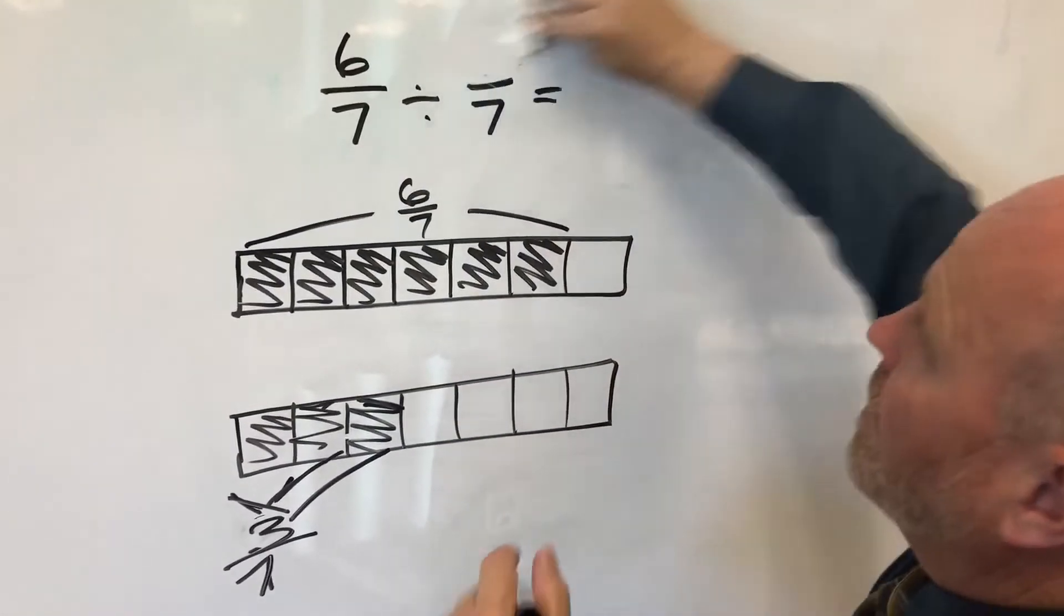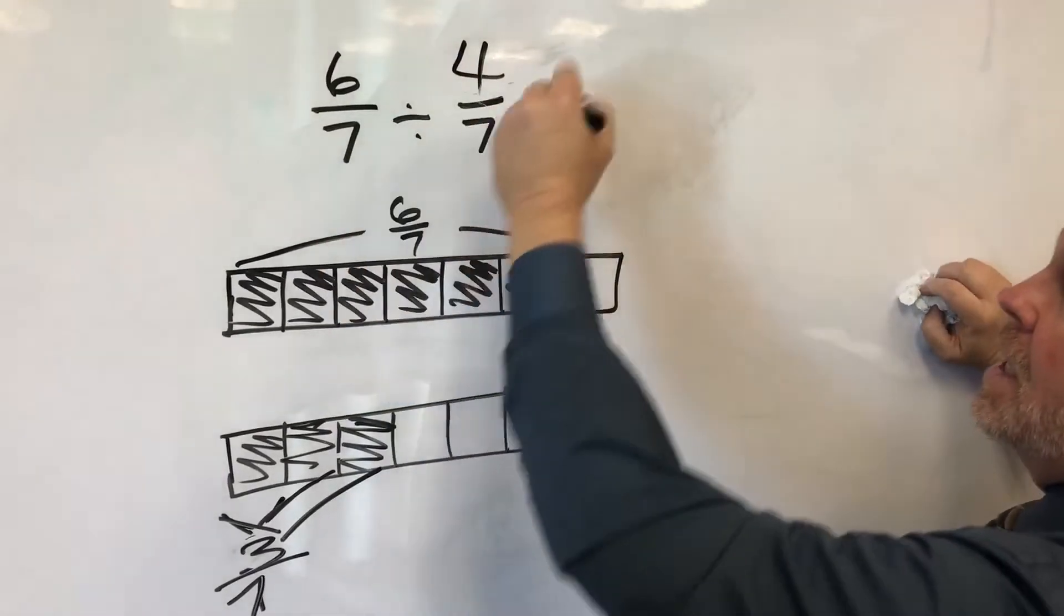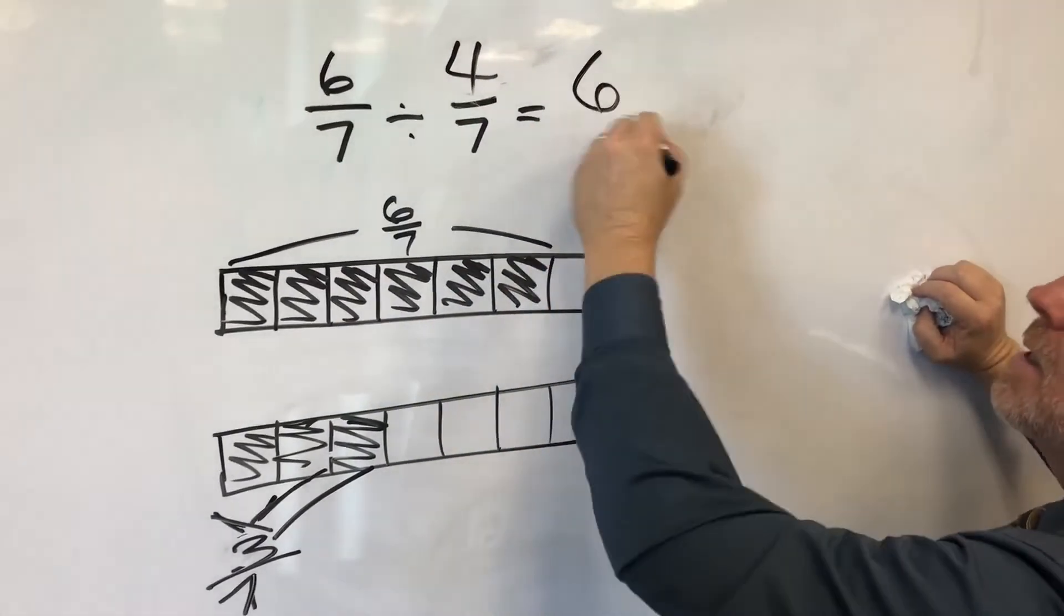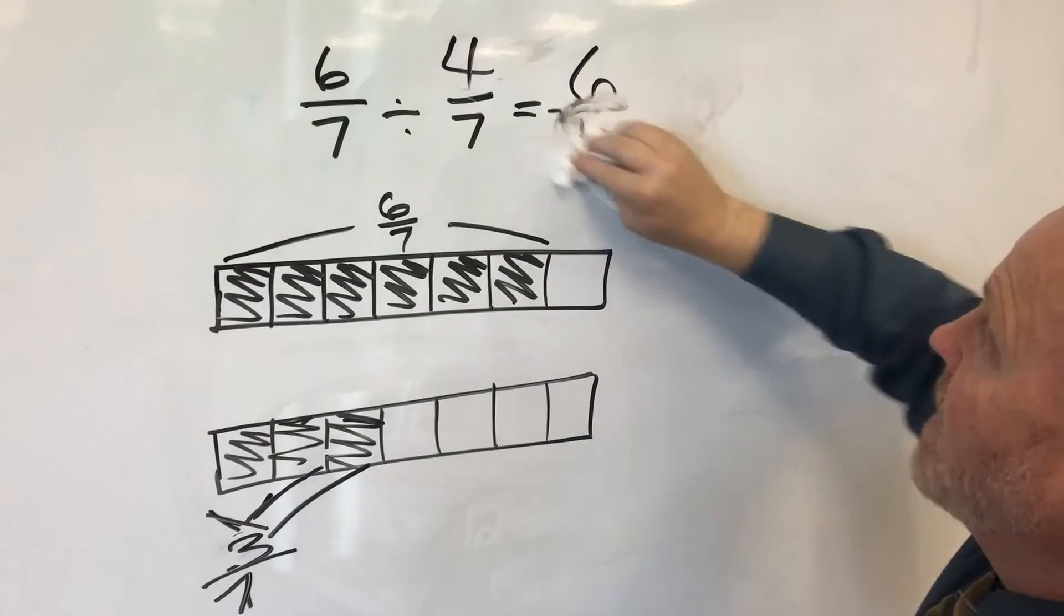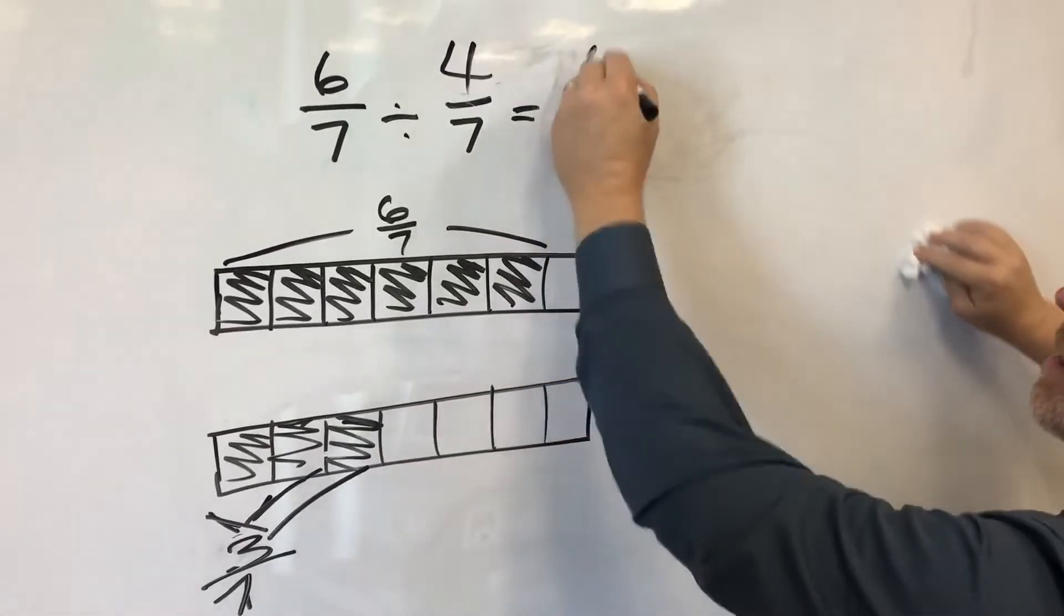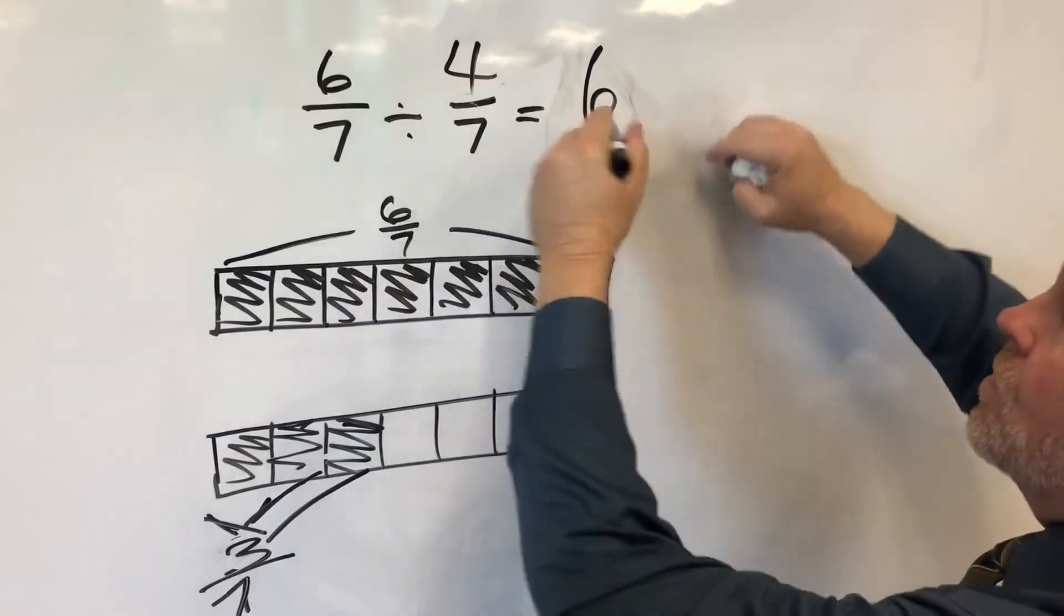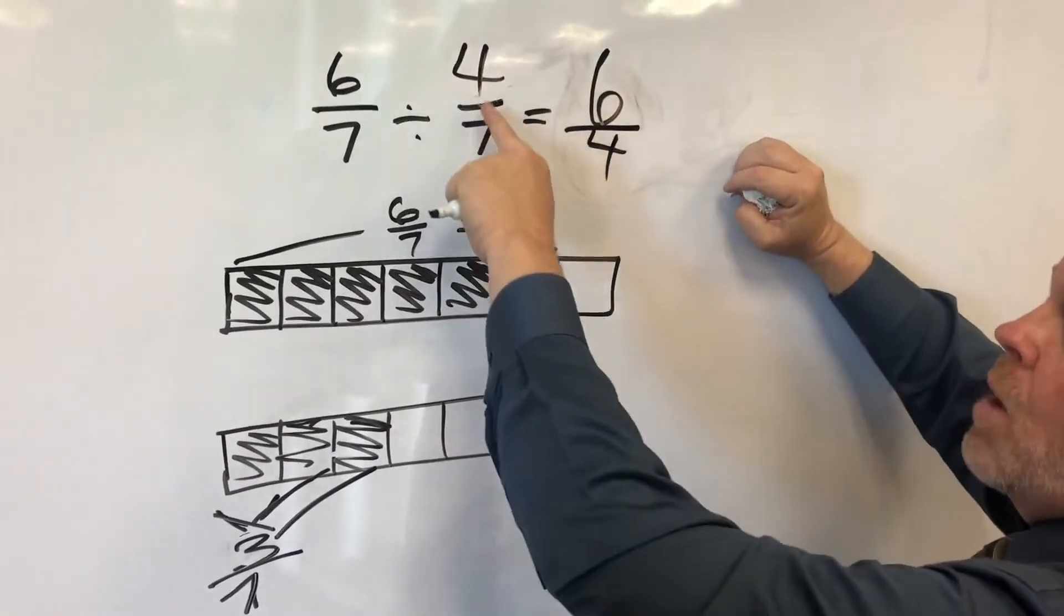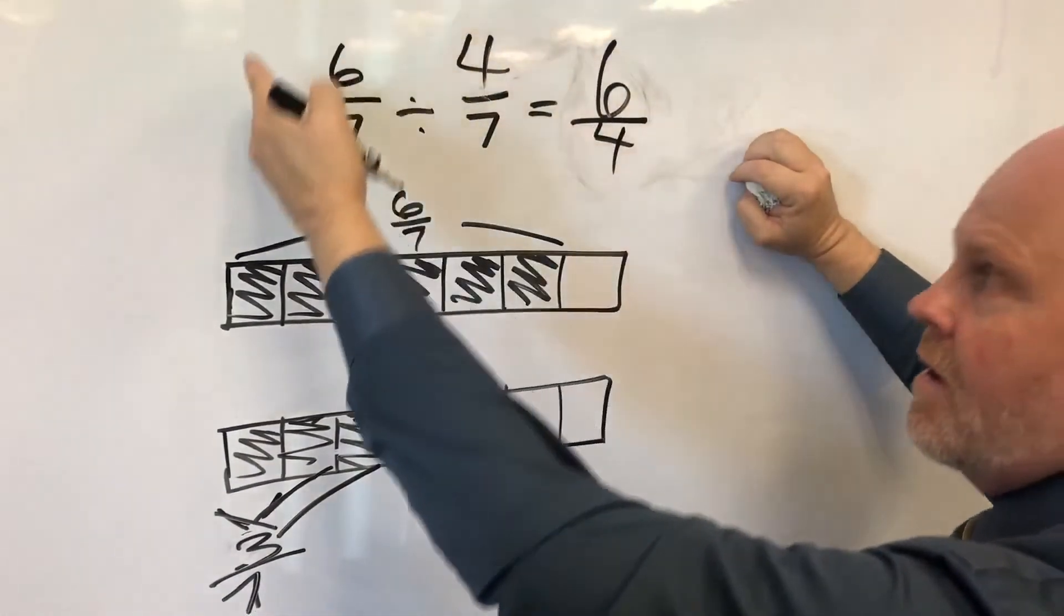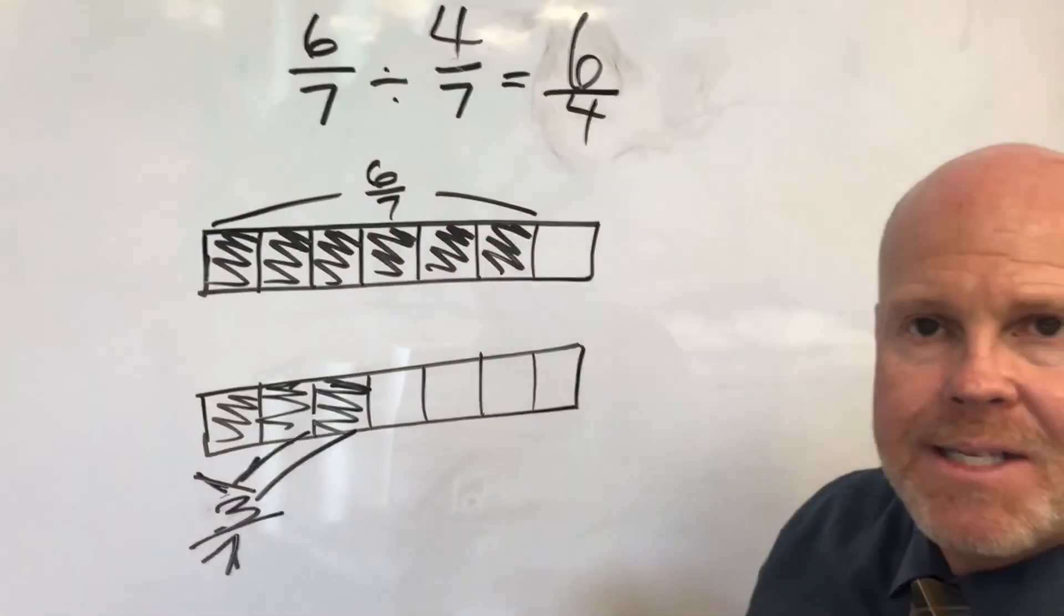So if we wanted four sevenths, it would be six divided by four, because that six gives us how many one sevenths fit. So divide by four because we want to know how many four sevenths fit. And that's the process.